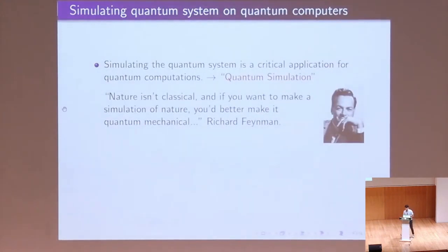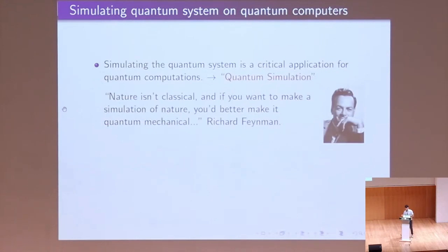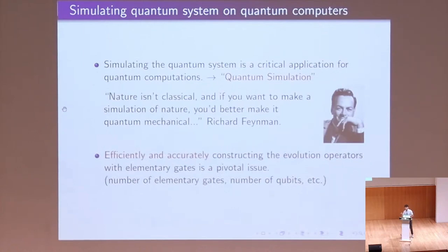Simulating the quantum system is a critical application for quantum computers — we call it quantum simulation. I quote a sentence from Richard Feynman: he said that nature is not classical, and if you want to make a simulation of nature, you better make it quantum mechanical. This means that the inherent quantum nature of quantum computers makes them the best platform for us to study quantum systems. However, quantum resources are currently limited, so we must find ways to cleverly design and construct the evolution operator efficiently and accurately in terms of the number of elementary gates and qubits.